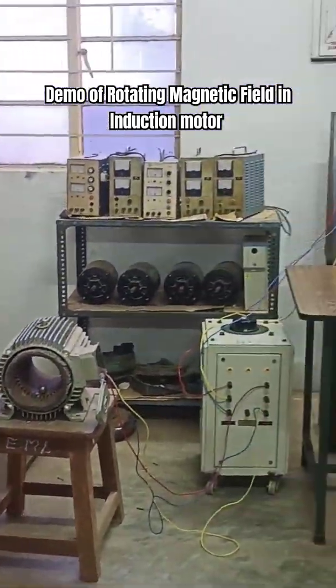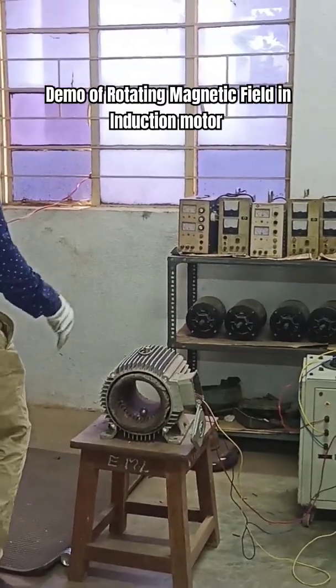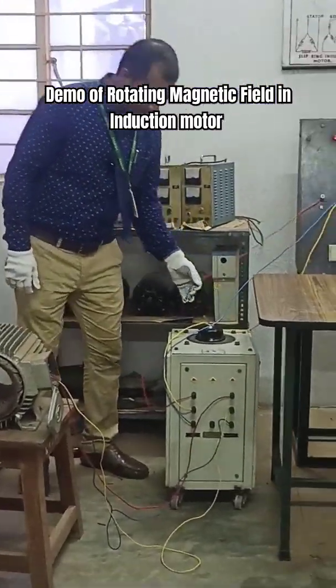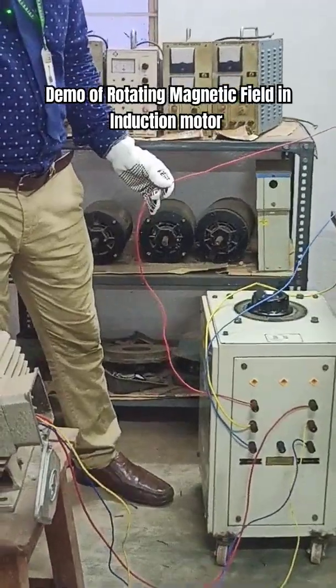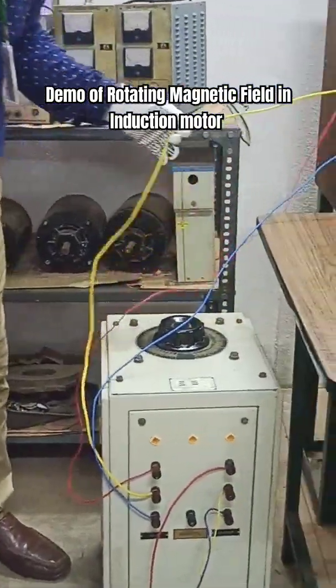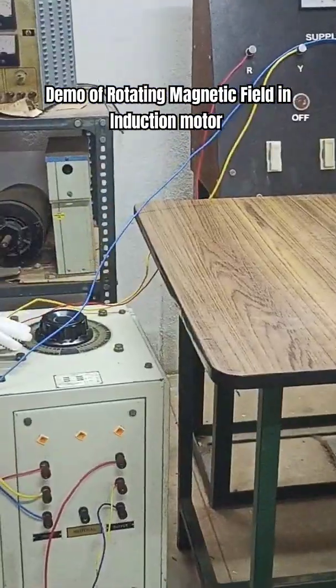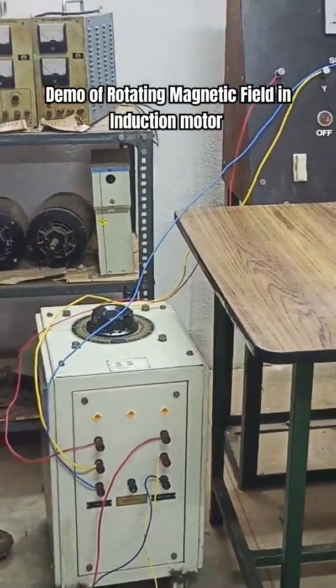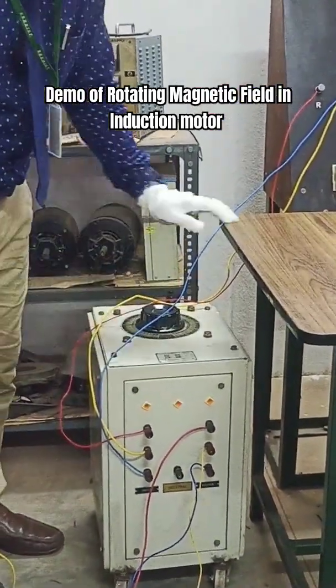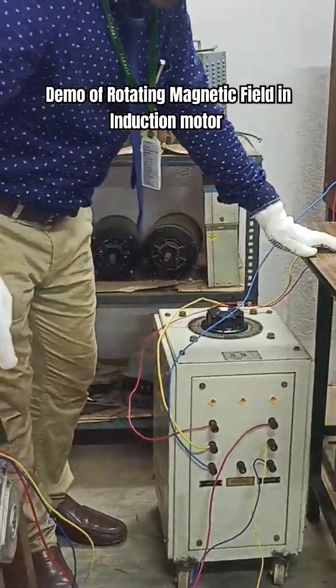Let us see how to operate the three-phase induction motor. The input to the variac R, Y, B is given to an auto transformer, and the output of the auto transformer is connected to the winding which